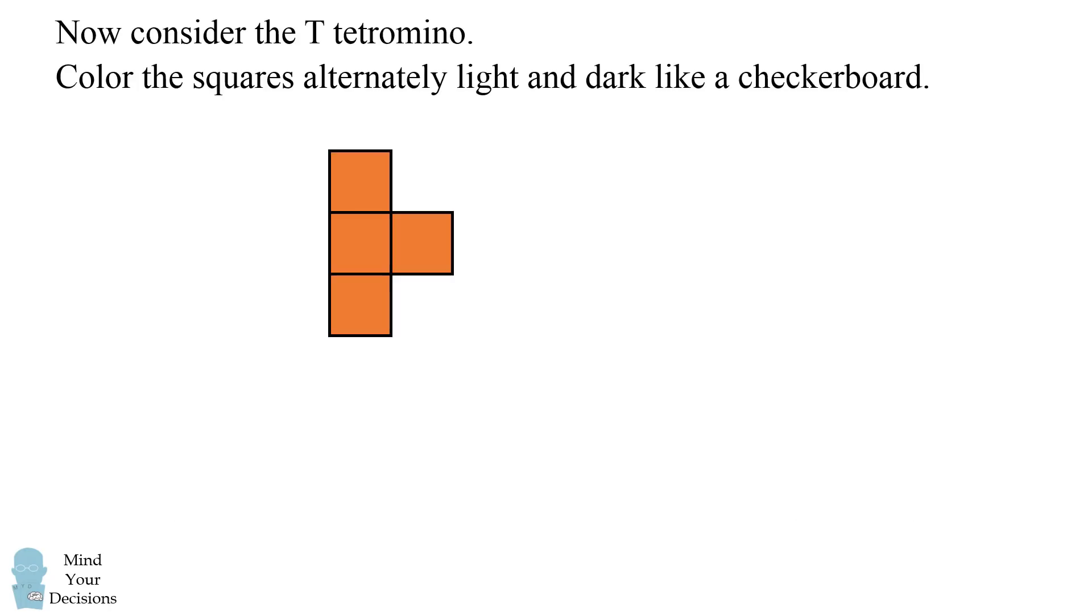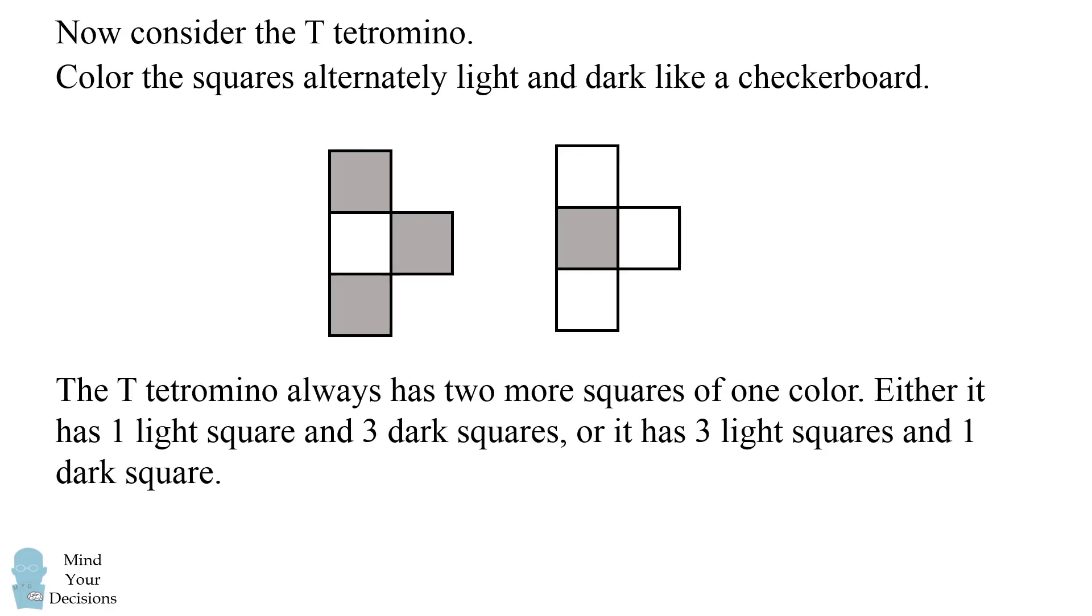Now let's consider the T tetromino. What happens when we color it like a checkerboard? Here's one way you could color it, and here's another way. The T tetromino always has two more squares of one color.